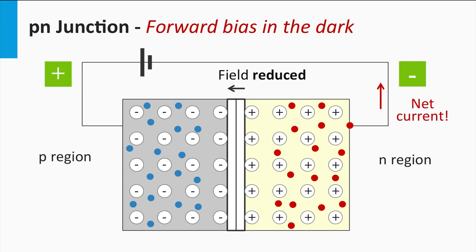If we apply a forward bias on such a P-N junction in the dark, the width of the depletion zone gets smaller, the diffusion of majority charge carriers is significantly enhanced and overrules the drift of minority charge carriers. The P-N junction becomes conductive and is able to generate a current.